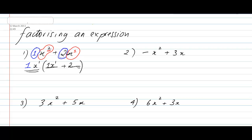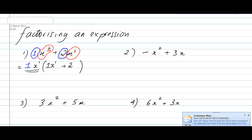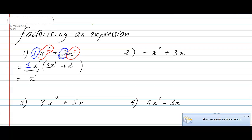Now tidy it up a little bit by removing the ones in front of the letters and the powers. For instance, 1 times x to the power of 1 — we don't need to write the 1 because x on its own means 1x, so we write just x. And we don't write the power of 1 either. Inside the brackets I've got 1x to the power of 1, so I simplify that to just x, and the 2 stays the same. So my final answer is x bracket x plus 2.